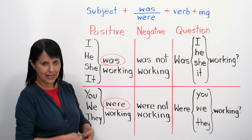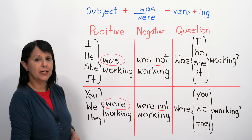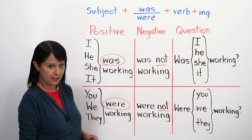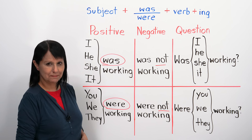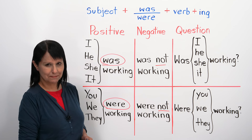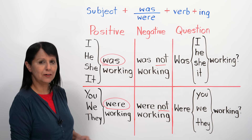For a negative sentence, it's very easy — we just add 'not.' For example: I was not working, he was not working, she was not working, it was not working, you were not working, we were not working, they were not working.